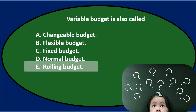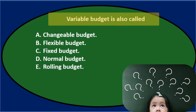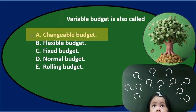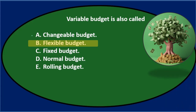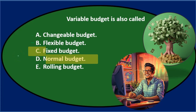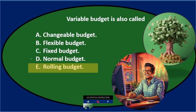Let's go through this using the process of elimination. Variable budget is also called A, a changeable budget — that sounds like it's changing, so that seems reasonable. B, a flexible budget, also implies change, so that seems reasonable. C, a fixed budget — that seems like a counter term to variable, almost opposite. D, normal budget — maybe a variable budget is normal. And E, a rolling budget — that kind of implies motion.